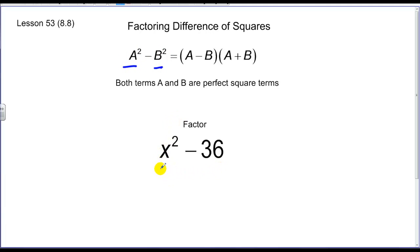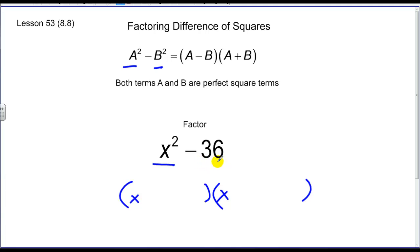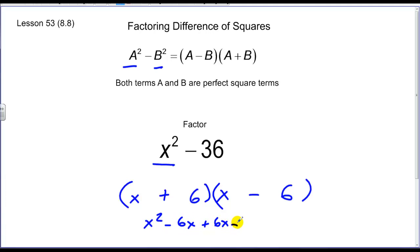With x squared minus 36, my first term is a perfect square. The square root of x squared is x, so I put those factors in the first portion of my binomial. Then the second term is 36, and the square root of 36 is 6. I need a positive and a negative. When I FOIL this out, I get x squared minus 6x plus 6x minus 36. The 6x terms subtract out, and I'm left with x squared minus 36.